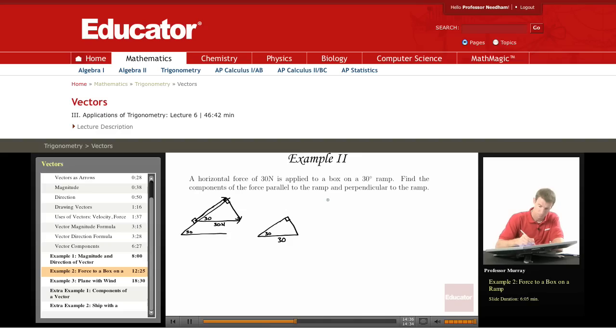SOH CAH TOA says that sine of theta is equal to the opposite over the hypotenuse. The opposite side to angle theta is that, and that's the adjacent angle to angle theta. And of course this is the hypotenuse.